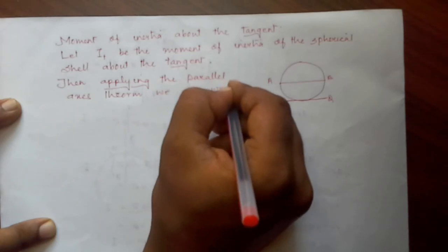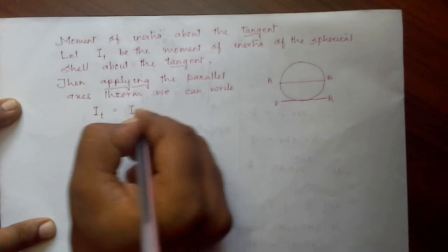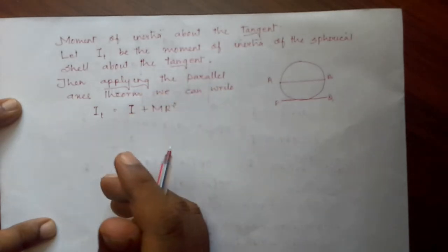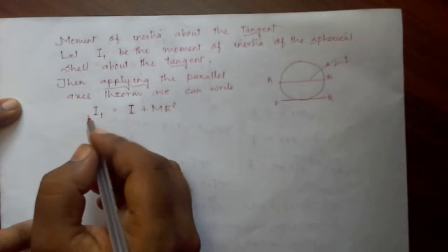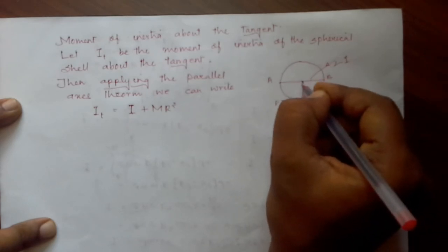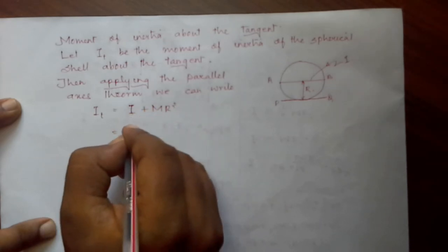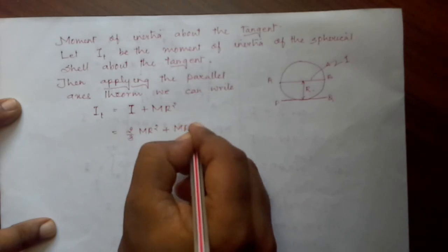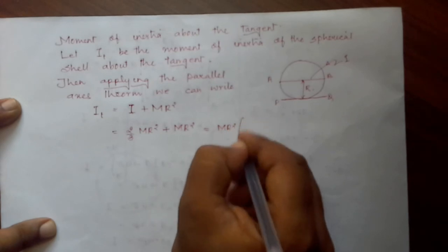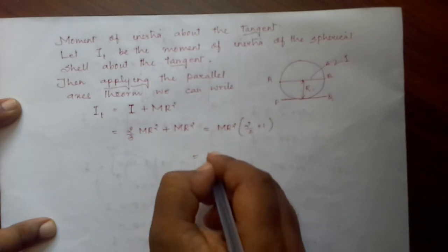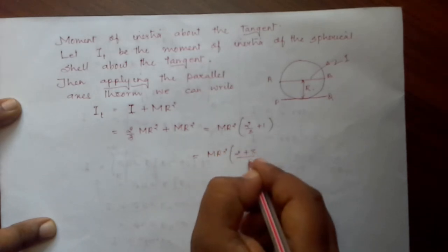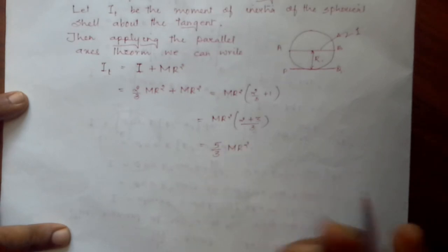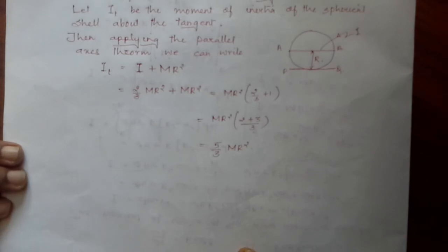We can write I_t = I + Mr², where I is the moment of inertia about the diameter and the distance from the center to the tangent is r. So I_t = (2/3)Mr² + Mr² = Mr²(2/3 + 1) = Mr² × (2 + 3)/3 = (5/3)Mr². This is the moment of inertia of the thin spherical shell about the tangent.